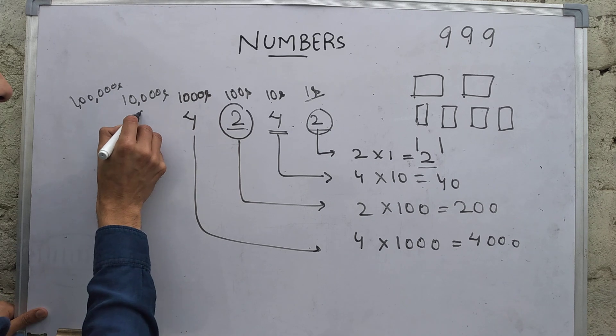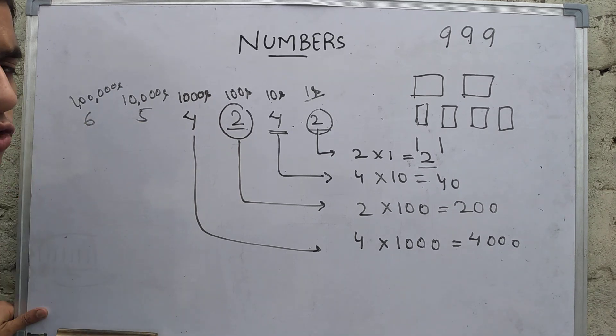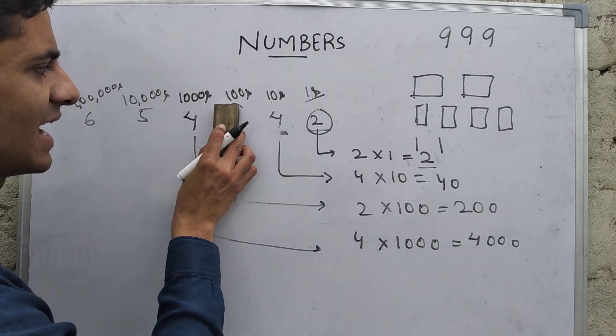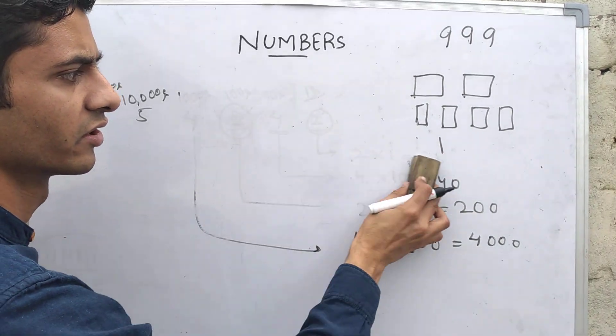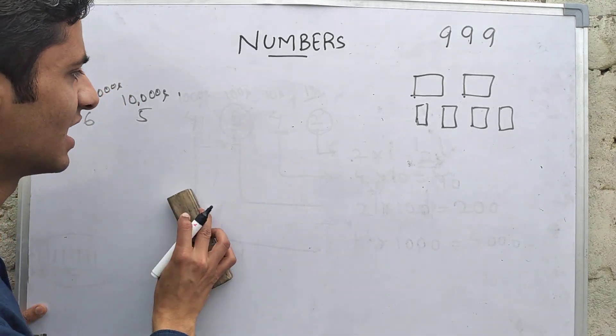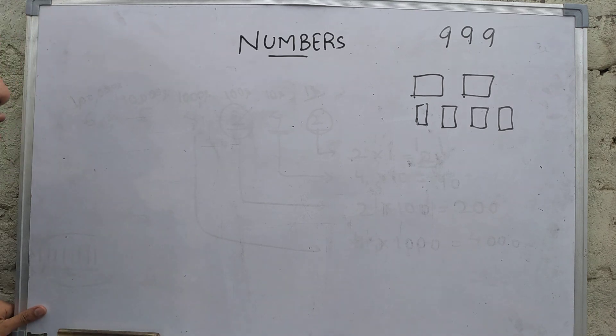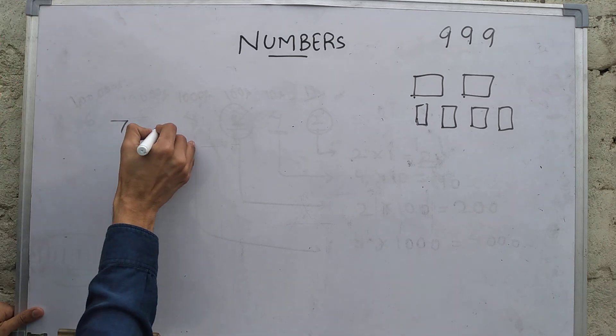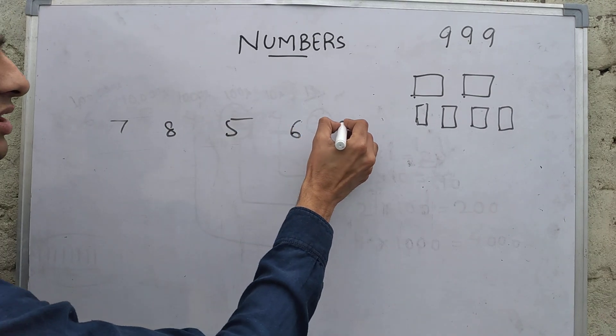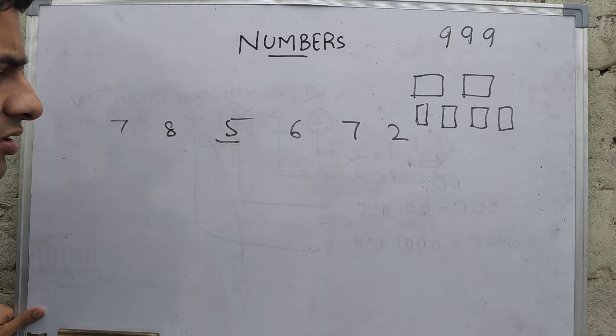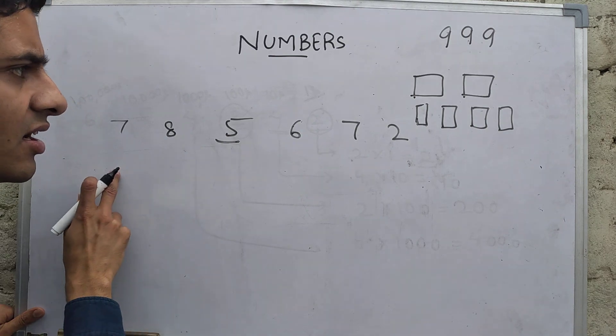Then one lakhs place, and it keeps on going. And this is something we call place value. And a chart representing these place values easily is called a place value chart. Suppose I have written this number and I ask you what is the place value of five.